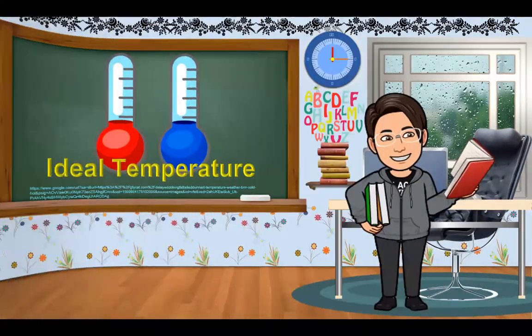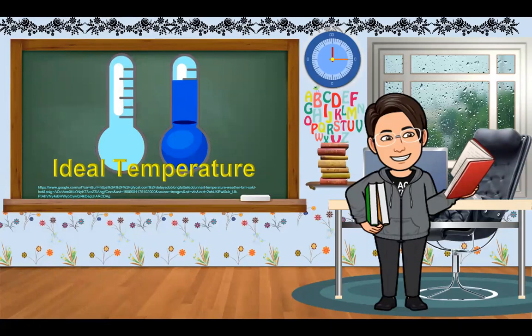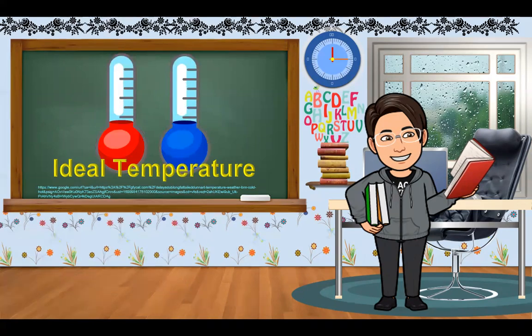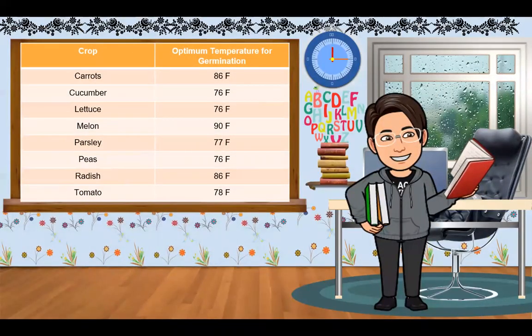The next requirement is ideal temperature. Bottom heat is advantageous for propagation. Heated propagation mats are made for this purpose and are often incorporated into incubation chambers and propagation tables. Providing the ideal ambient temperature for your seeds will encourage quick germination. The chart below shows optimum germination temperatures for a variety of plants.